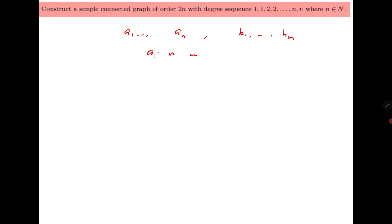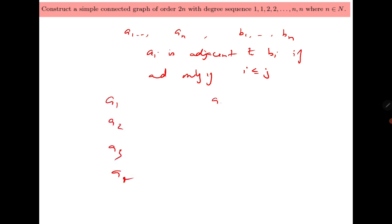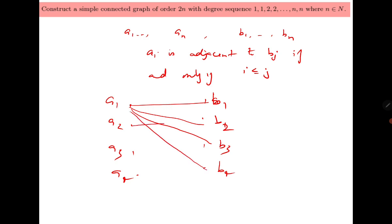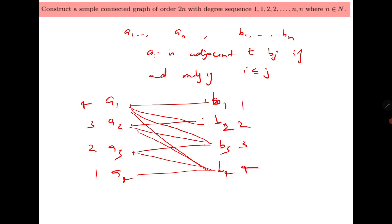Say that ai is adjacent to bj if and only if i ≤ j. For example, with a1, a2, a3, a4 and b1, b2, b3, b4: a1 is adjacent to b1, b2, b3, b4; a2 is adjacent to b2, b3, b4; a3 is adjacent to b3, b4; and a4 is adjacent to b4. This gives degree sequences 4, 3, 2, 1 for the a-vertices and 1, 2, 3, 4 for the b-vertices, resulting in the overall degree sequence 1, 1, 2, 2, 3, 3, 4, 4.